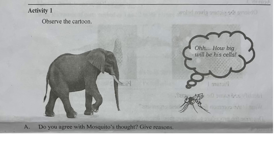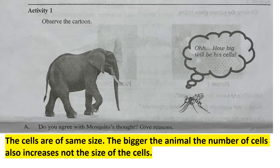Cells are of the same size. The bigger the animal, the number of cells also increases but not the size of the cells. All cells are the same size. I will not agree with the mosquito's view.